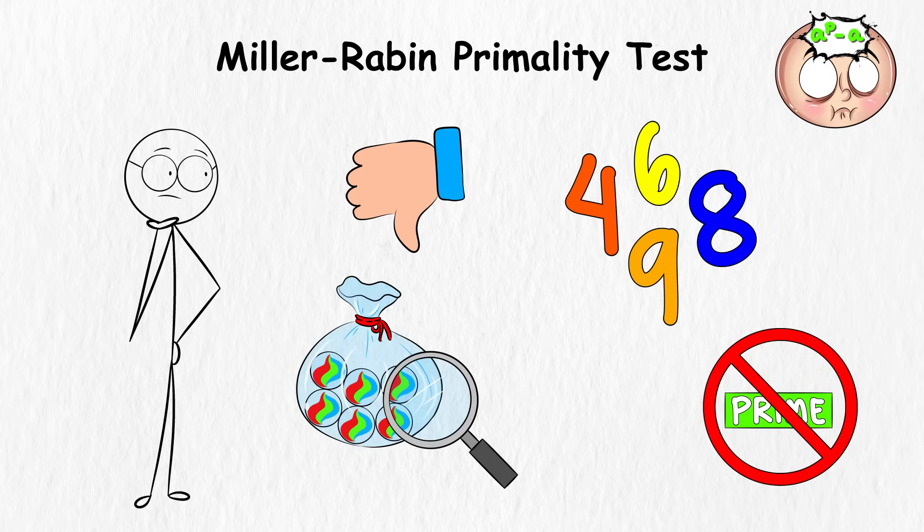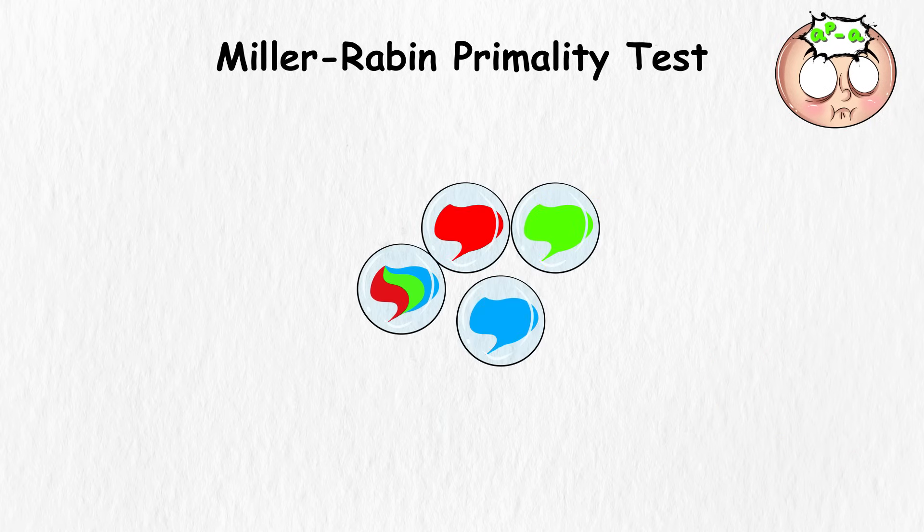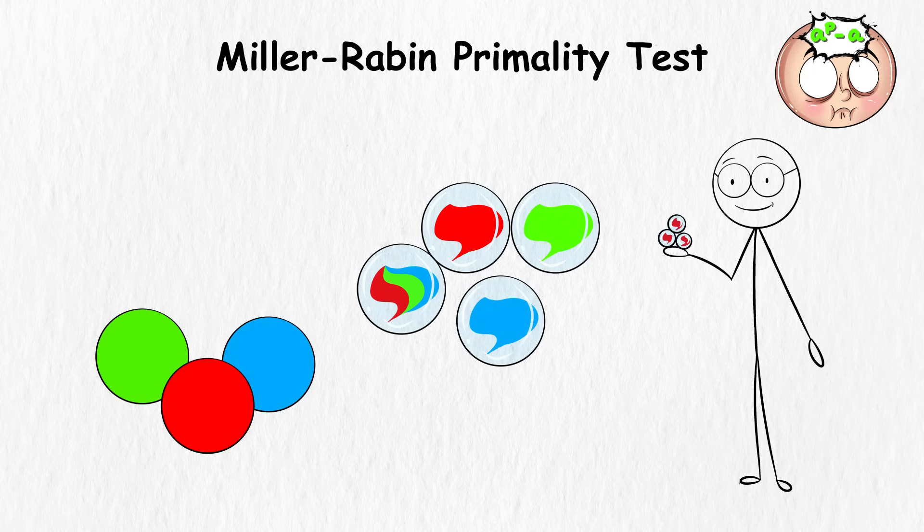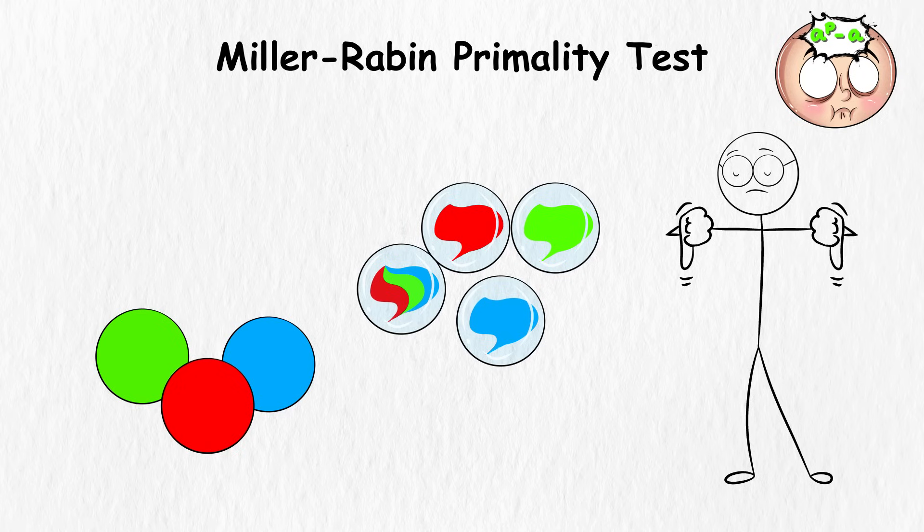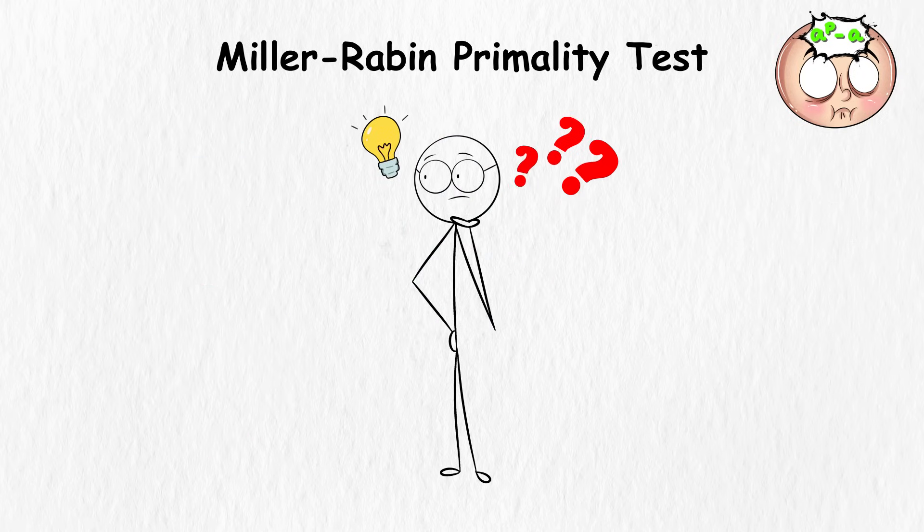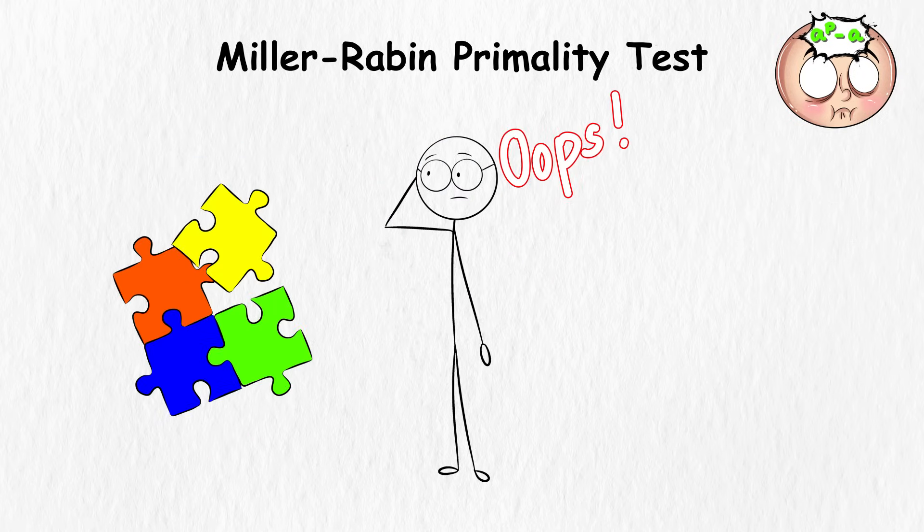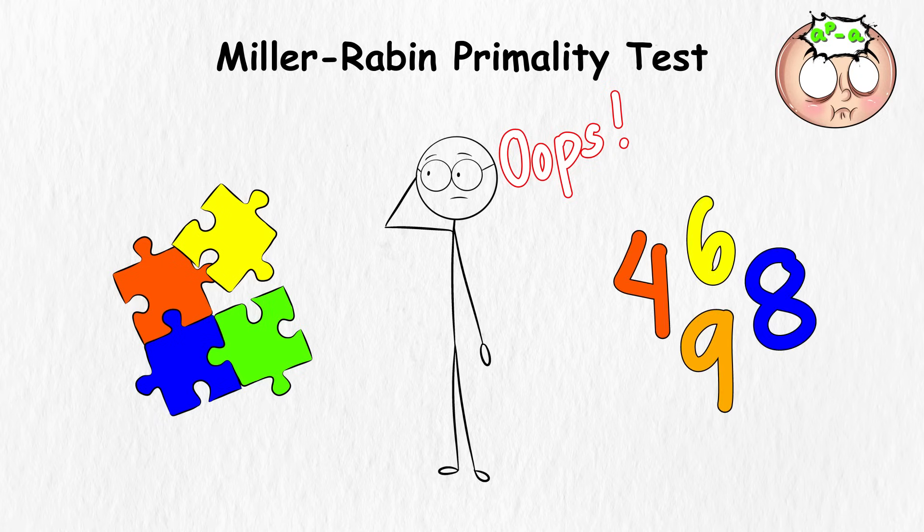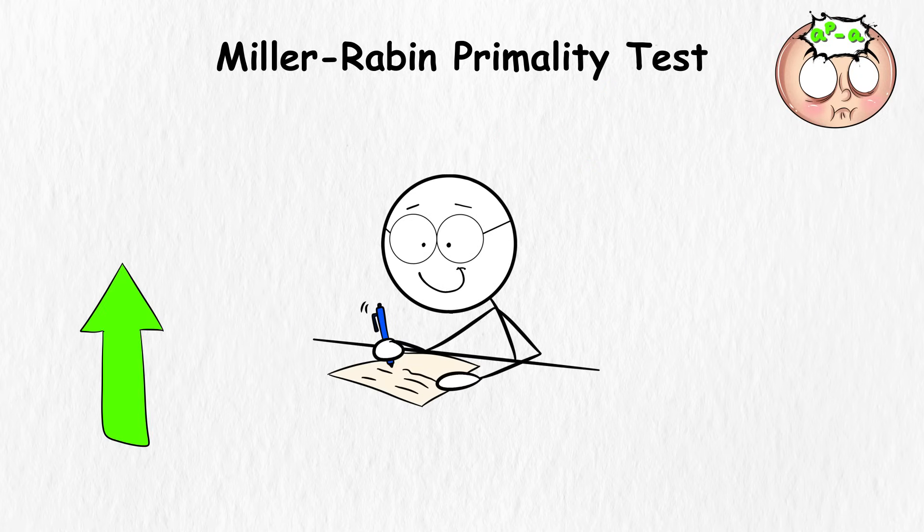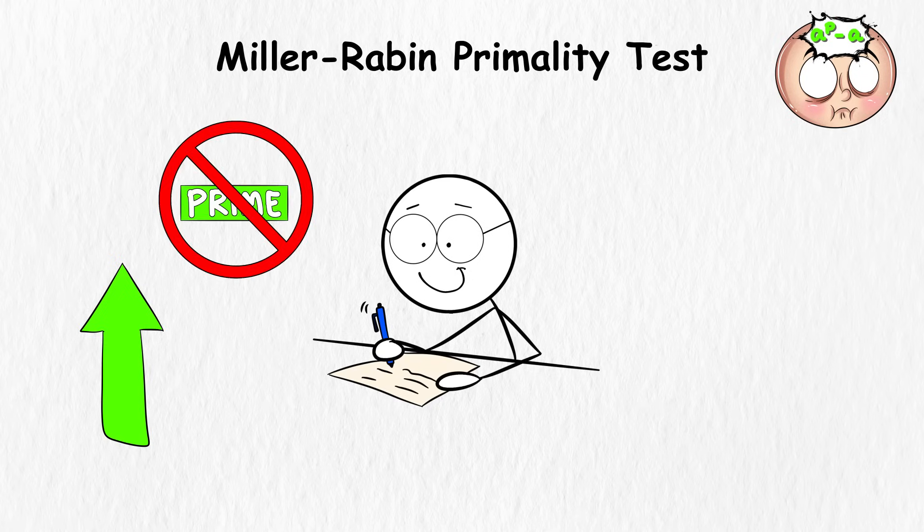Think of it like checking if a bag of marbles has only one kind of color. If you find a few marbles of different colors, you can be pretty sure the bag has more than one color. But if all the marbles you pick look the same, you might still be wrong if there are hidden colors you can't see. The Miller-Rabin Test is good at guessing, but it's not perfect. It's like playing a game where you can make a mistake, but you can improve your guesses by trying many different random numbers. The more you test, the better your chances of finding out if the number is really prime or not.